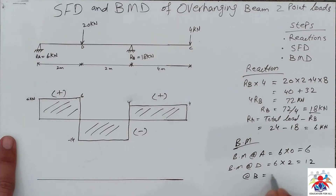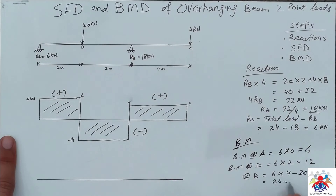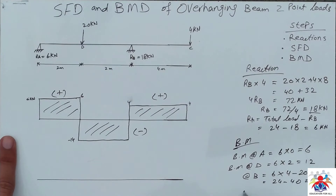Bending moment at point B: 6 multiplied by 4 minus 20 multiplied by 2, which gives 24 minus 40, equal to minus 16 kilonewton-meter.